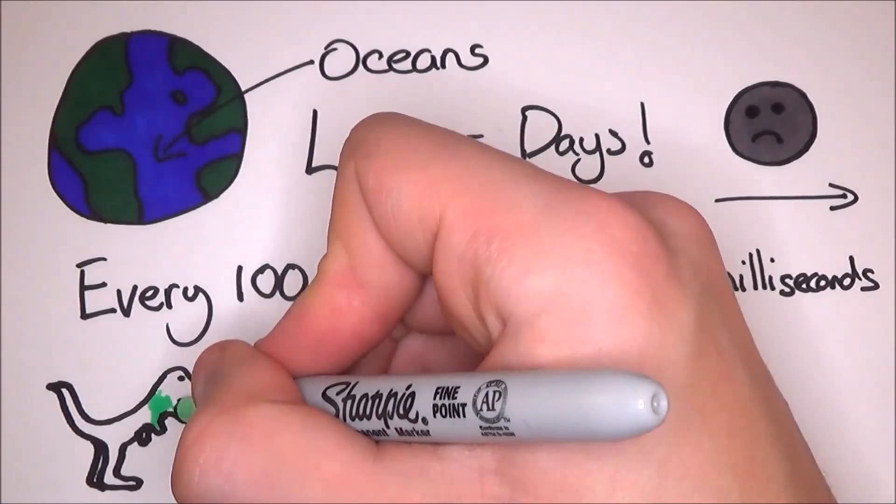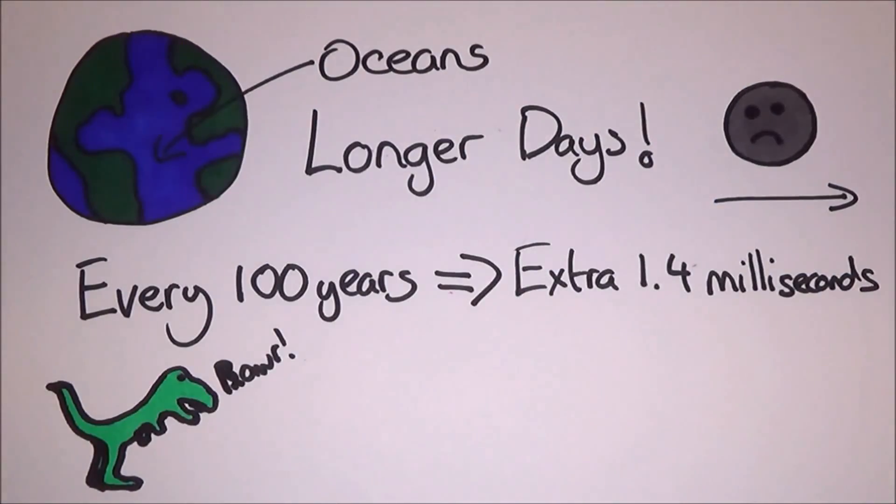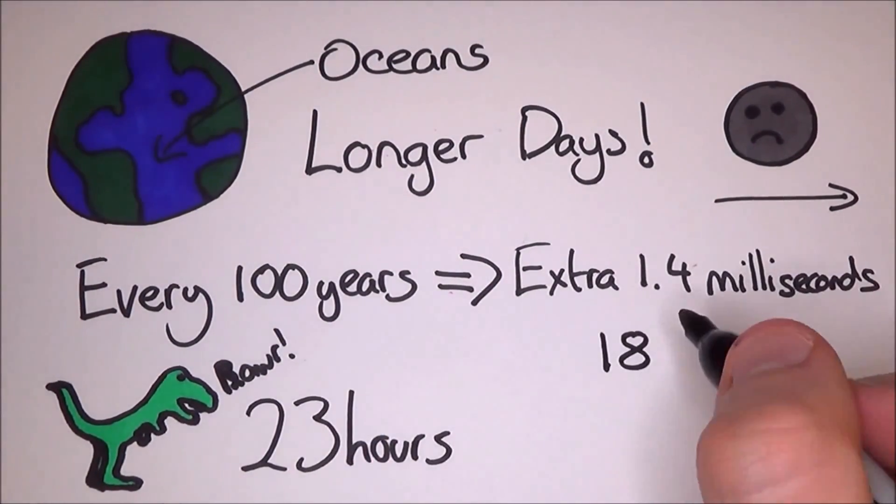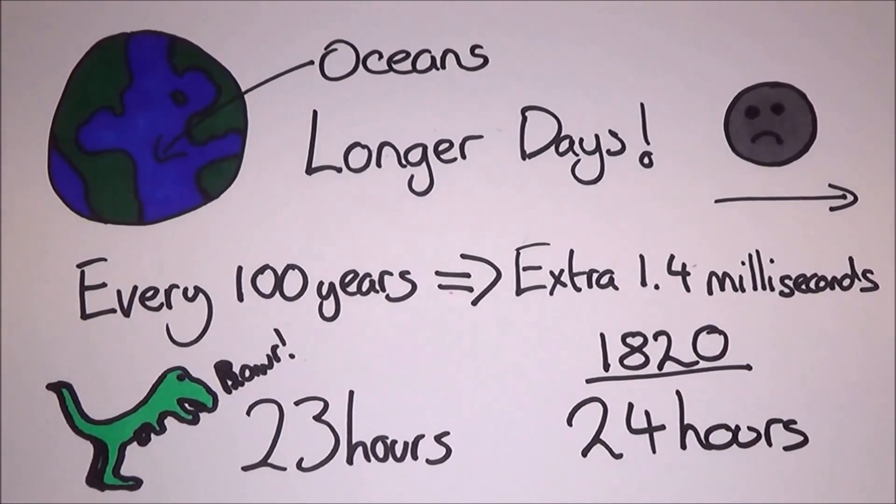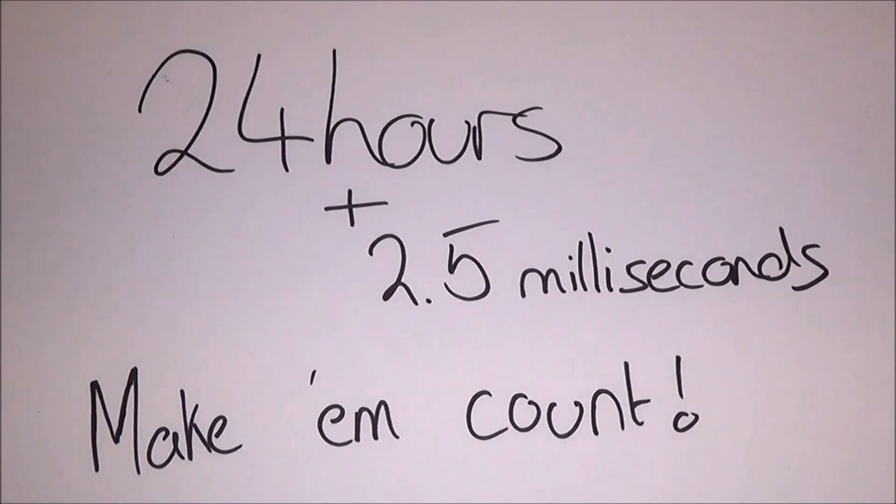This means that about 200 million years ago, during dinosaurs, the day was actually only 23 hours long. And in 1820, the day was exactly 24 hours long. But now it's more like 24 hours and 2.5 milliseconds. Make them extra milliseconds count.